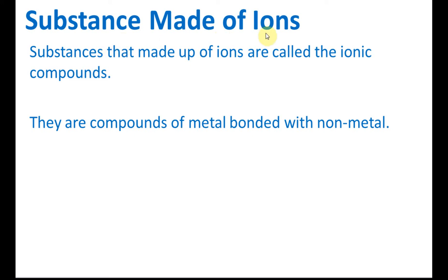Substance made of ions. Substances made of ions are called ionic compounds, and they are compounds of metal bonded with non-metal. For ionic compounds, we must have positive ions and negative ions. The positive ions usually come from metal and the negative ions normally come from non-metals. So it's a combination of metals and non-metals.